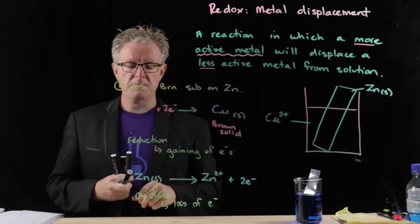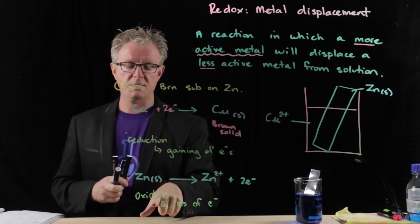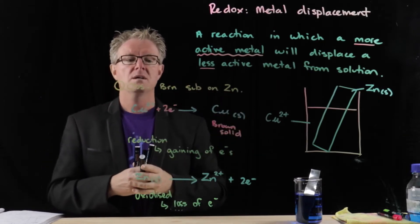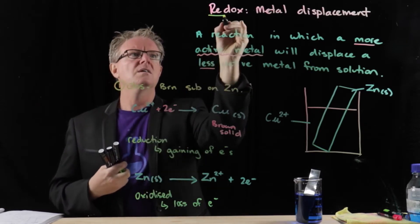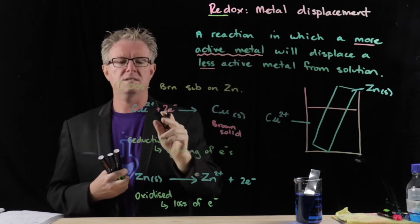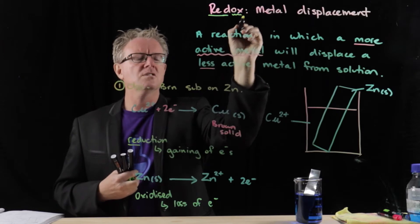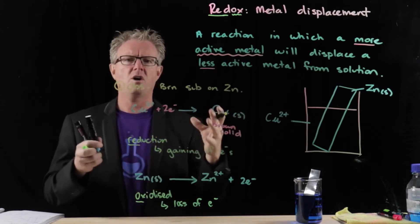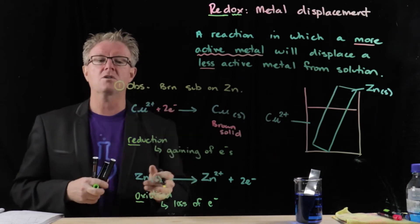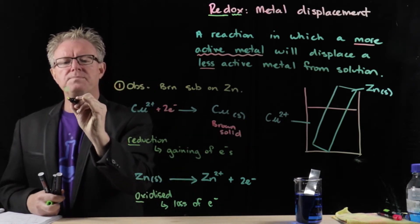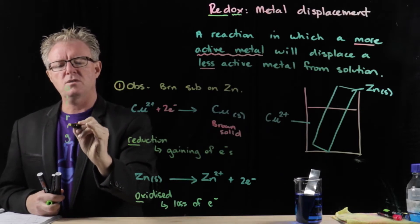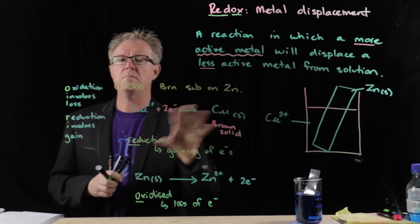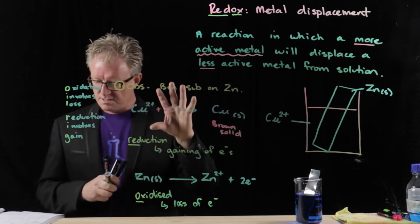So here we have two things happening simultaneously: reduction — the gaining of electrons — and oxidation — the loss of electrons. They happen at the same time; as one loses, another one accepts. The term 'redox' comes from 'red' for reduction and 'ox' for oxidation. Some people like to think of a red ox — the animal — to remember this. And we can remember the mnemonic OIL RIG: Oxidation Is Loss, Reduction Is Gain.